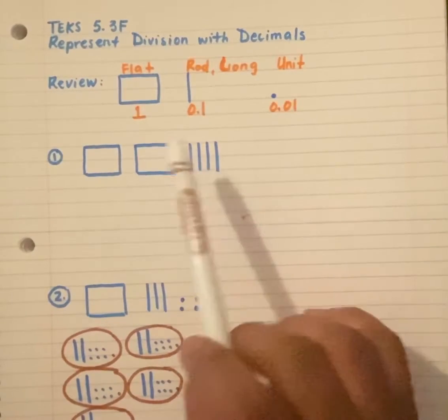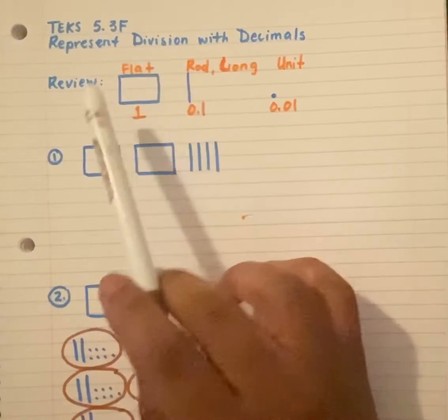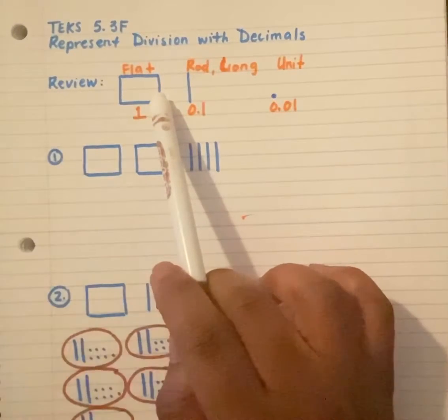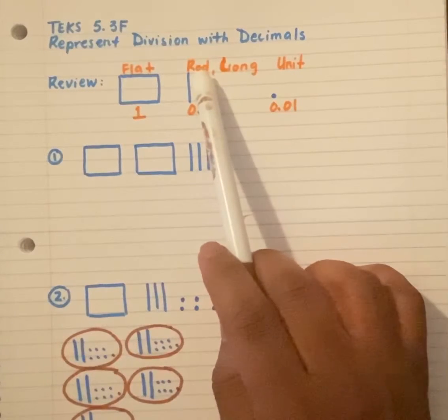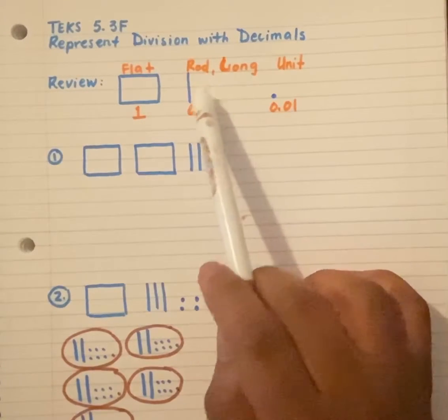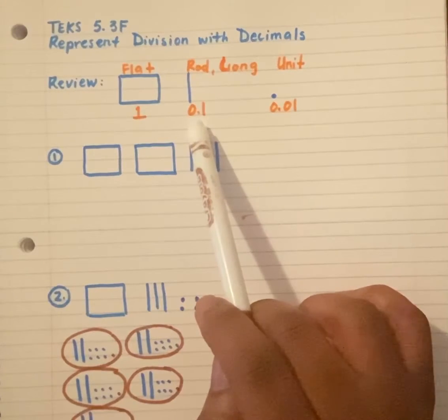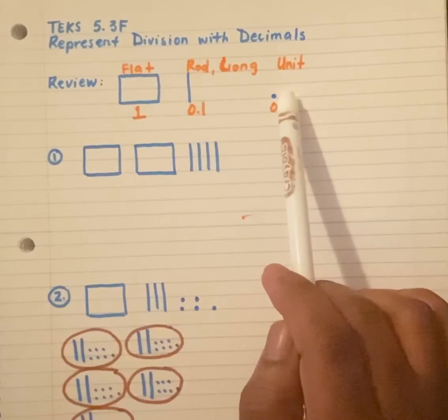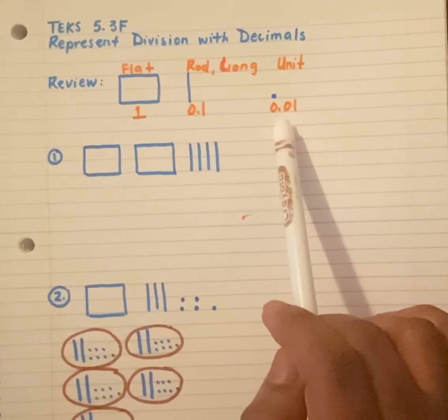So for a quick review, let's look at some of our base 10 pieces. For this TEKS, typically the flat, which looks like this, represents one whole. And then our rod or our long looks like this, and it represents one-tenth or a dime. And then our unit, which is a small square or sometimes maybe a small circle, represents one-hundredth or a penny.